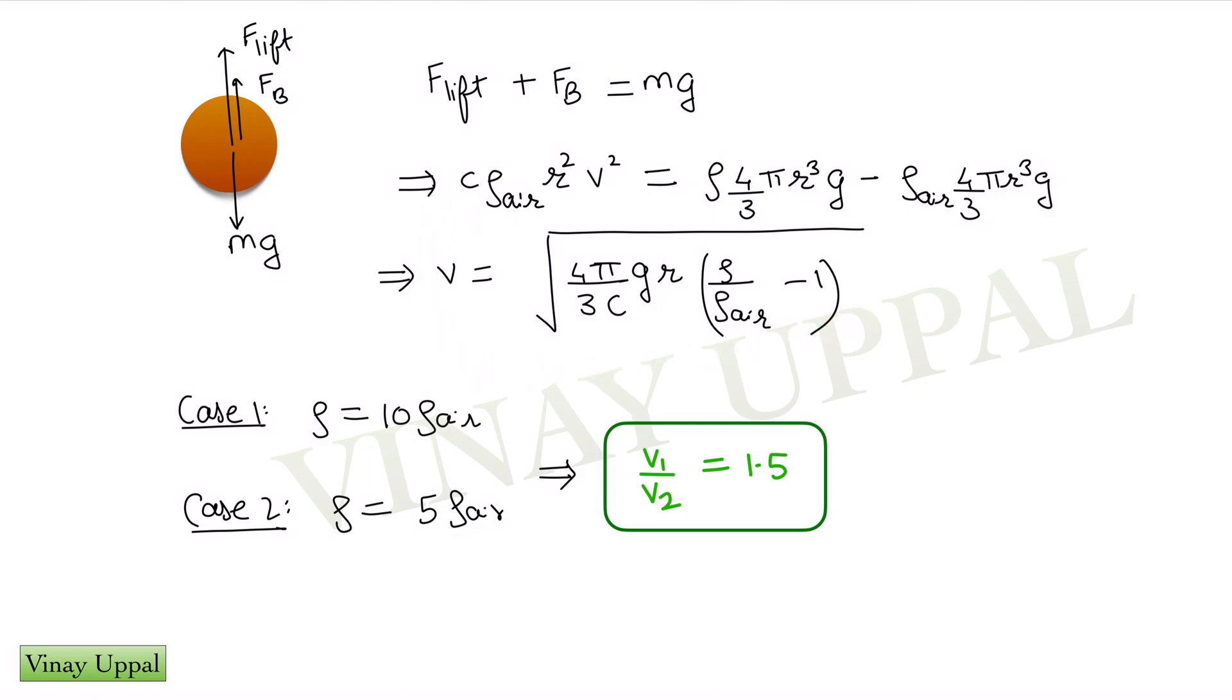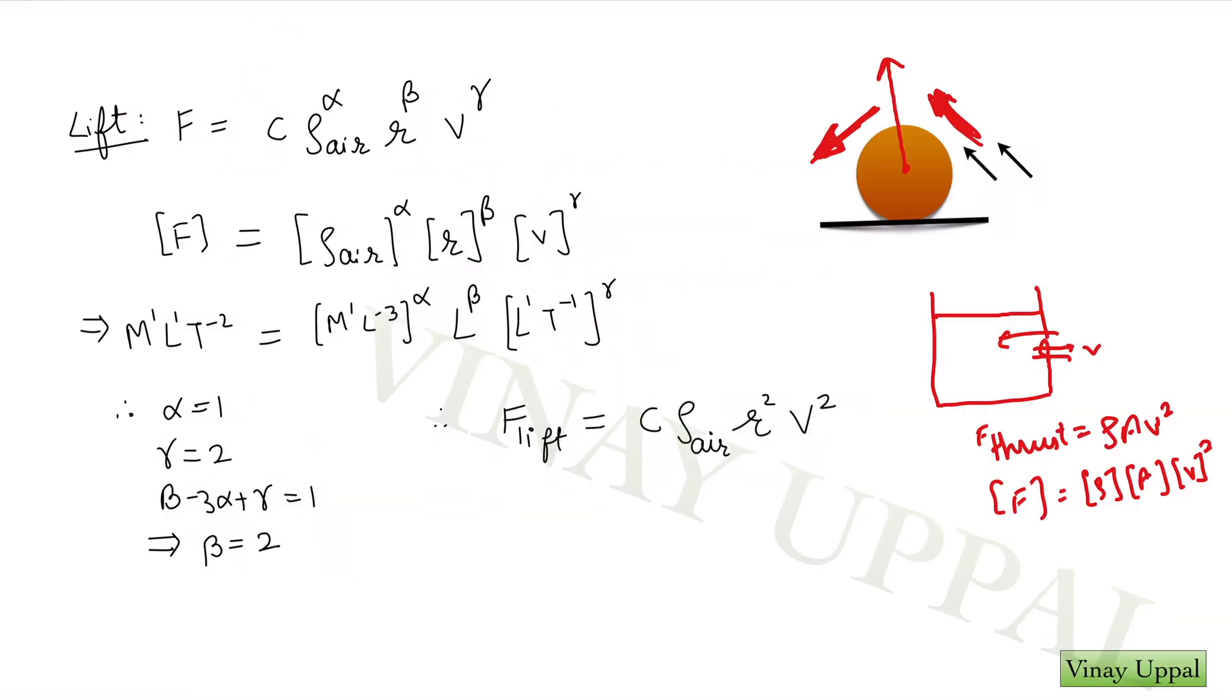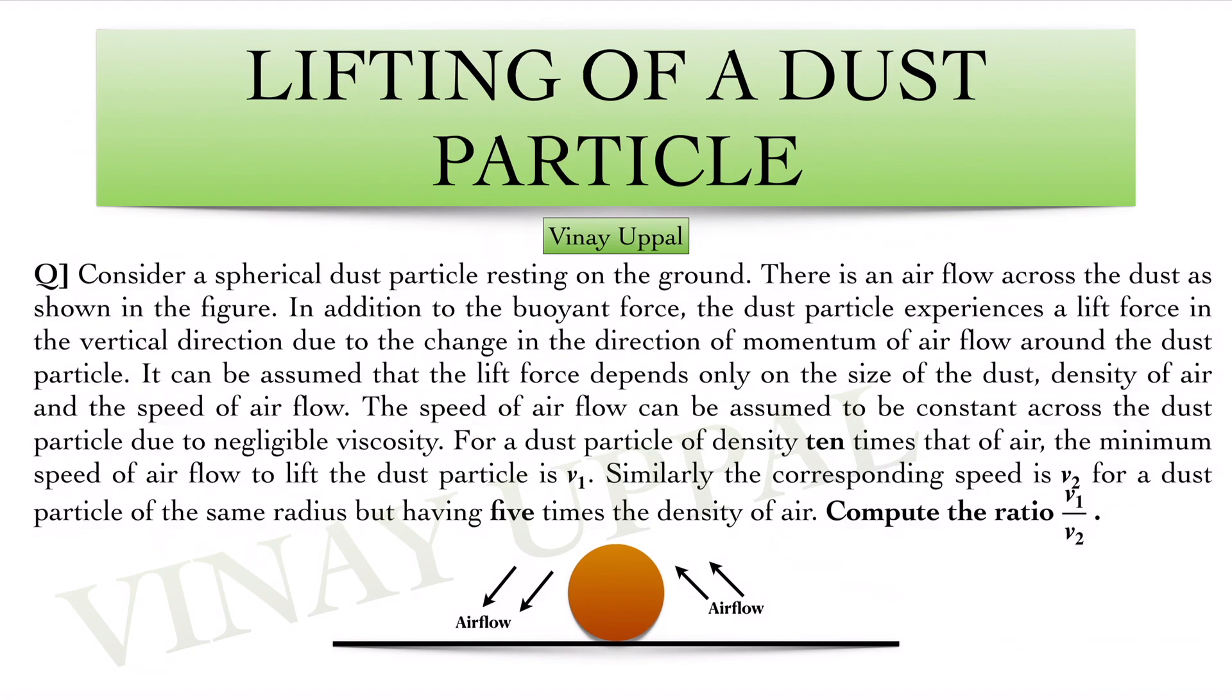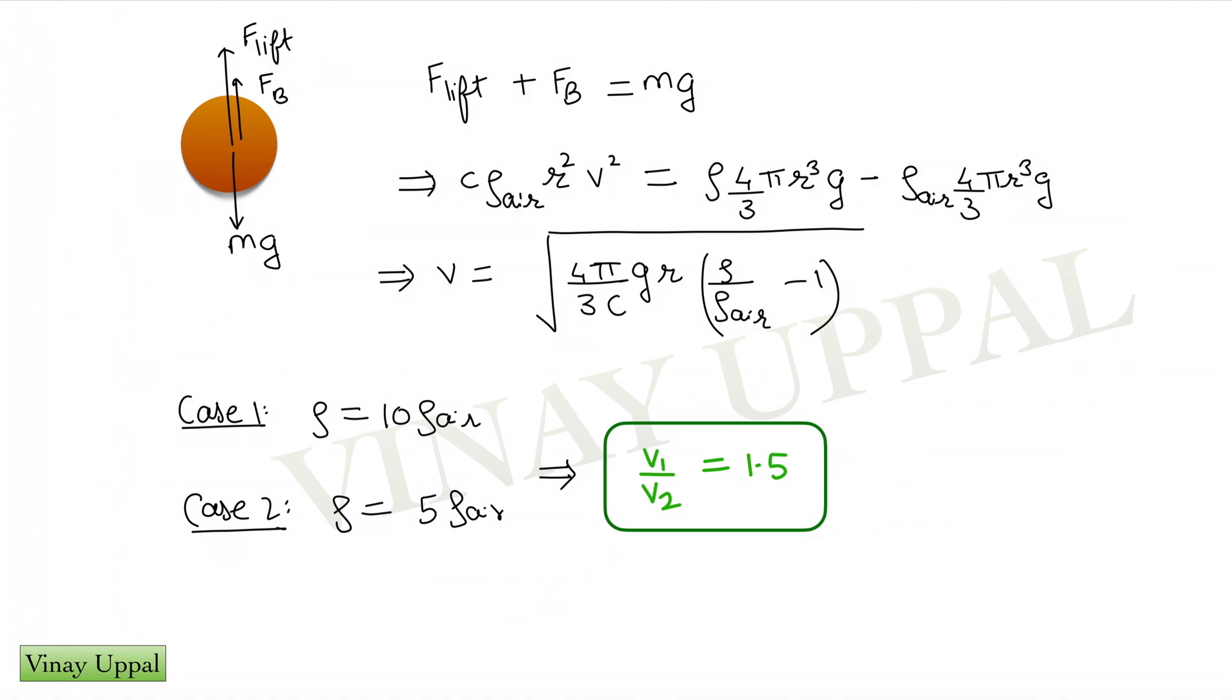Now what is the crucial factor here is the one in the bracket: density of the dust particle divided by density of air minus 1. Everything else is same for both the cases in the question. Remember the question had a dust particle of density 10 times that of air and the second case was a dust particle of the same radius but density is 5 times that of air and now it is just a case of substituting the respective densities. In the first case, it is 10 times and this ratio is 10. Second case, this ratio is 5 and let us take the ratio of the speeds and you will get the answer as 1.5.